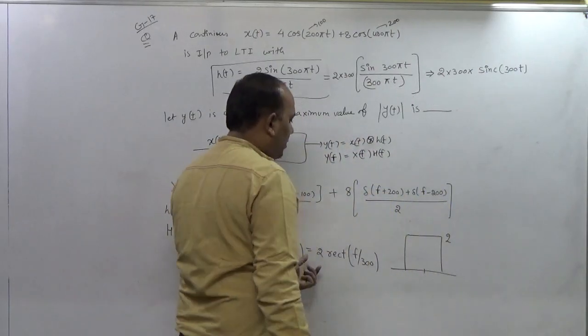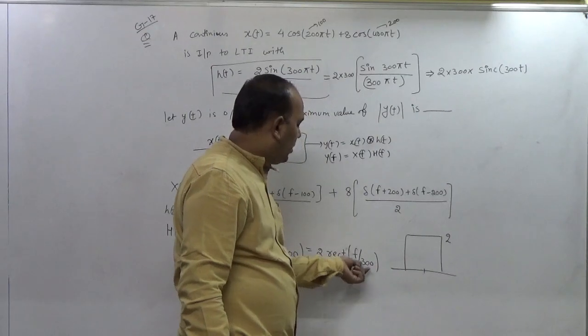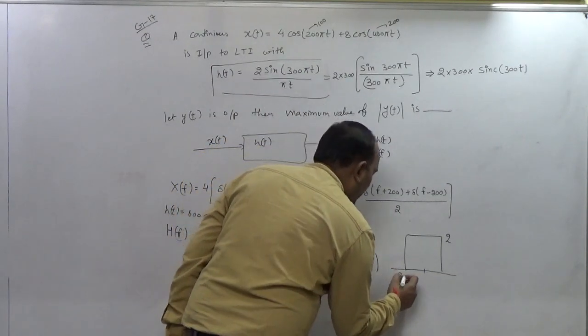But it is divided by 300, so it is multiplied by 300. So 300 divided by 2, so it is just 150 in negative and this is 150 in positive.